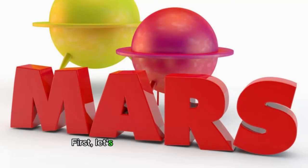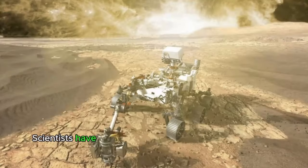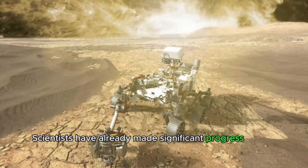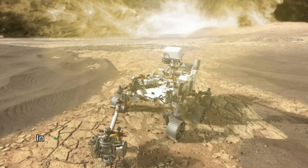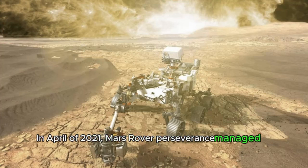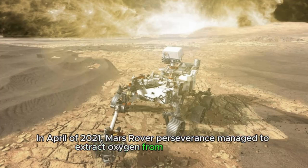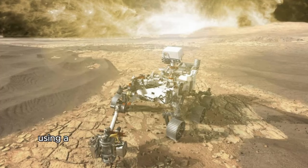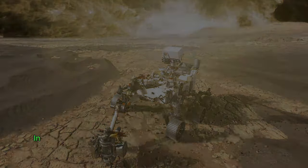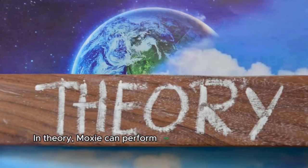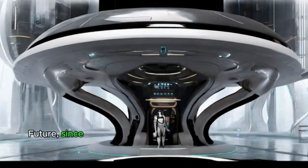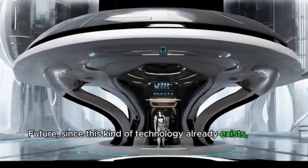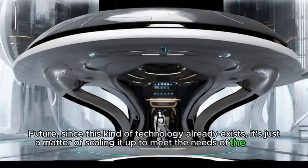First, let's tackle the matter of oxygen. Scientists have already made significant progress in that direction. In April of 2021, Mars rover Perseverance managed to extract oxygen from the atmosphere using a tool called MOXIE, by a process known as solid oxide electrolysis. In theory, MOXIE can perform the same function as trees on Earth. In the near future, since this kind of technology already exists, it's just a matter of scaling it up to meet the needs of the future colony.